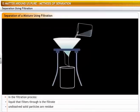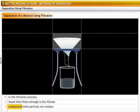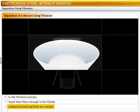If you pass a solution through filter paper, any undissolved solid particles will get left behind on the paper whereas the liquid will filter through. The liquid that passes through is called the filtrate and the undissolved solid particles are called residue.